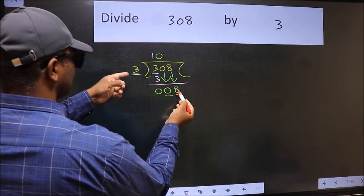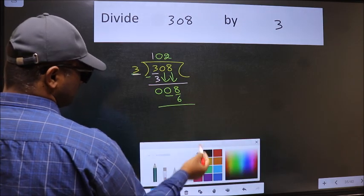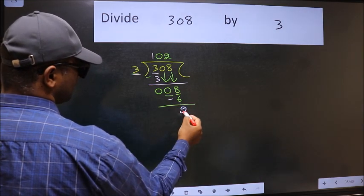A number close to 8 in the 3 table is 3 times 2, which is 6. Now, we should subtract. We get 2.